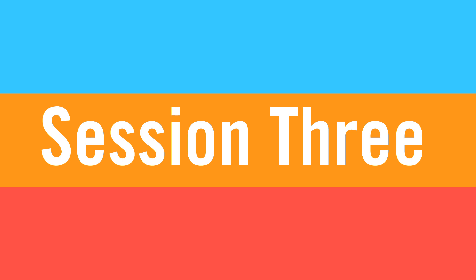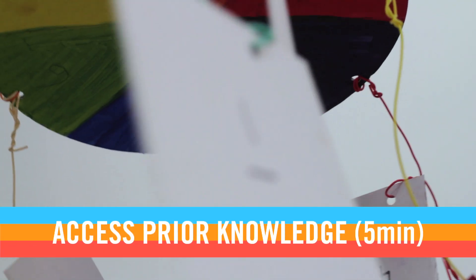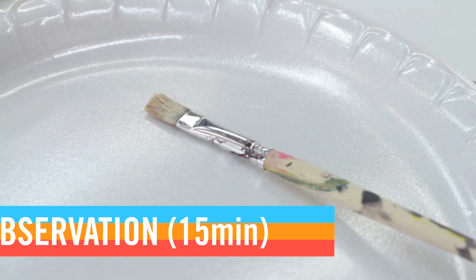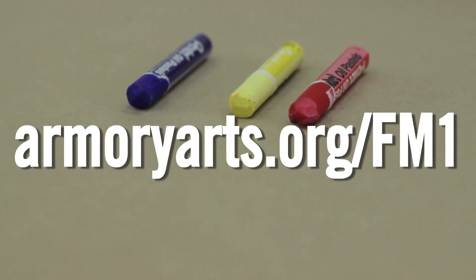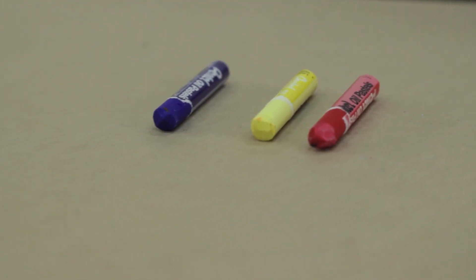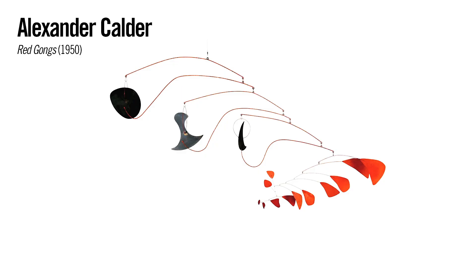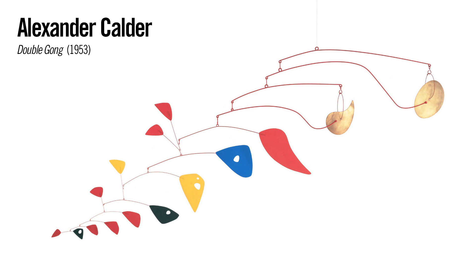Now it's time to create the mobile. First, let's access prior knowledge. Ask your class: what do you know about sculpture? And what is a mobile? Show and tell students about the life and art of American sculptor Alexander Calder. Visit armoryarts.org/fm1 to download a PDF version of this entire lesson plan, which contains biographical information about Calder and images of his artwork. Ask your students: what do you see? What shapes can you identify? What parts of a whole do you see? Make sure students understand that these parts are not fractions because they are not cut into equal pieces. What do you notice about how the artist uses color? What do you notice about how the shapes are arranged?